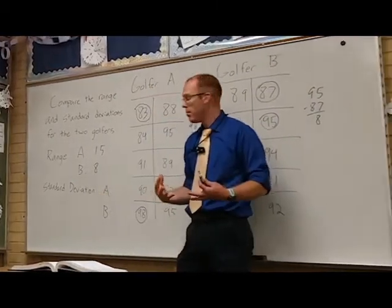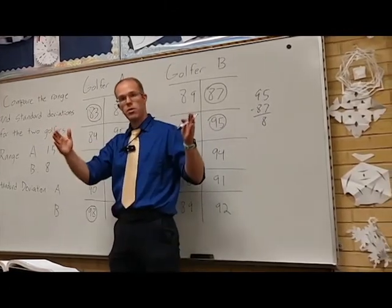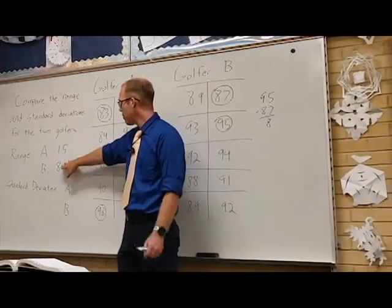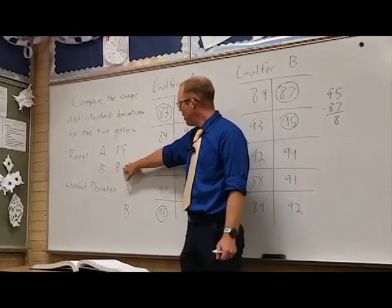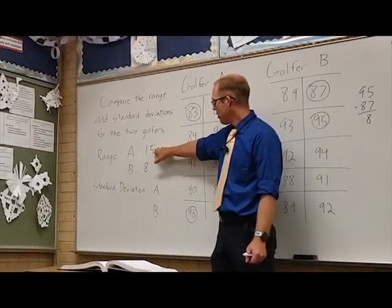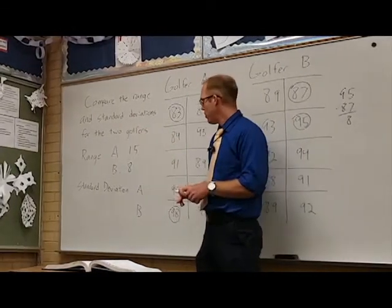What does that mean? That means golfer A from largest to smallest was 15 and golfer B was 8. This one had a far greater difference from its highest to its lowest score.